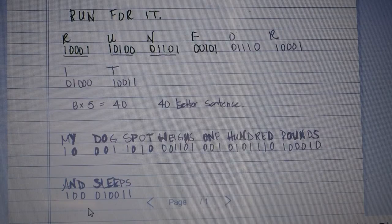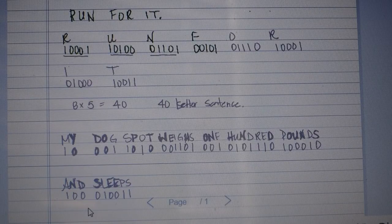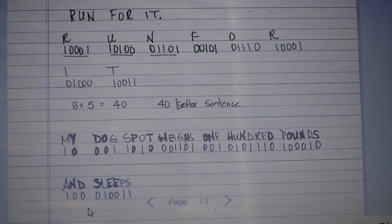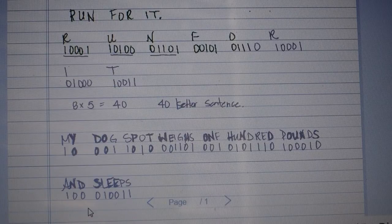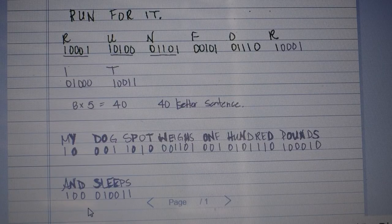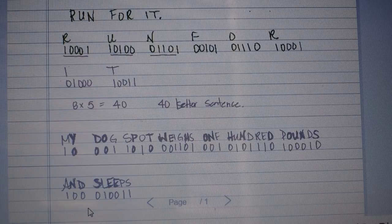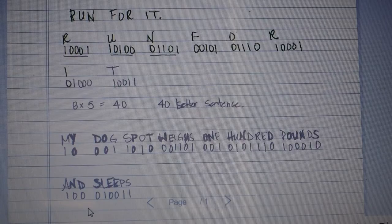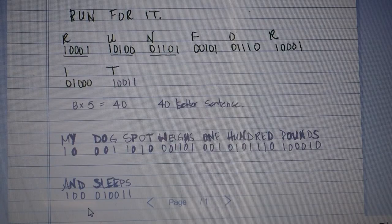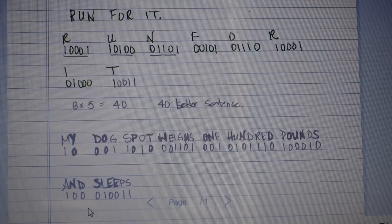We have F, that's going to be 00101, and O which is 01110, R again 10001. And then I'm going to do I, so I is 01000, T is 10011.